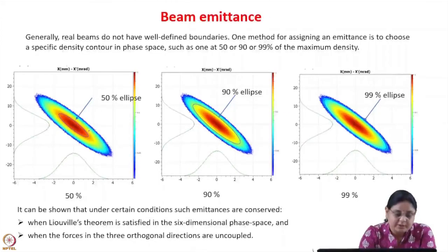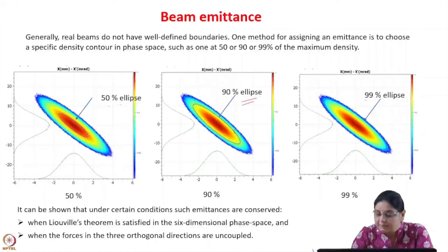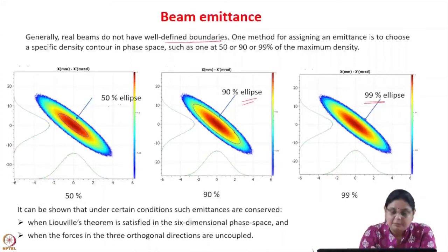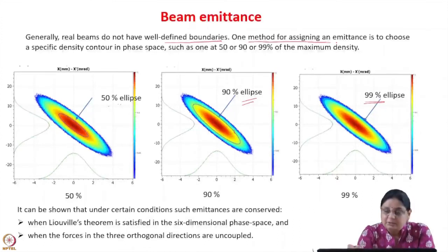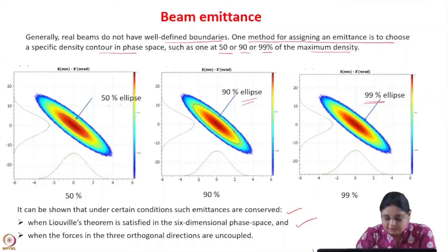One method for assigning an emittance is to choose a specific density contour in phase space, such as at 50%, 90%, or 99% of the maximum density. You can define an ellipse containing 90% of the particles — that is the 90% emittance — or 99% of the particles for the 99% emittance. It can be shown that under certain conditions, such emittances are conserved — for example, when Liouville's theorem is satisfied in 6-dimensional phase space, or when forces in the three orthogonal directions x, y, and z are uncoupled.